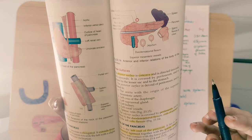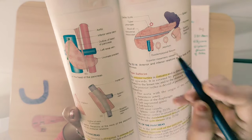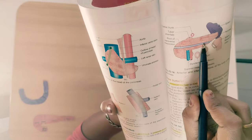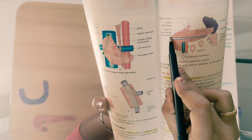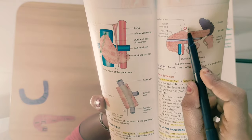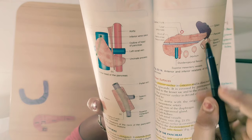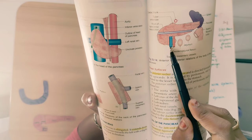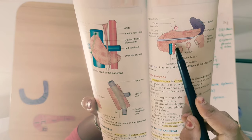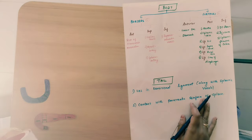The anterior border is coming in relation with the root of the transverse mesocolon. At the inferior border, the relation is with the superior mesenteric vessels — both the vein and the artery.